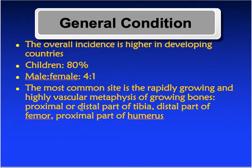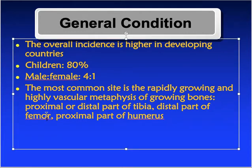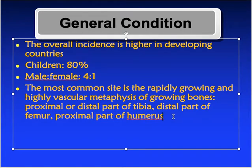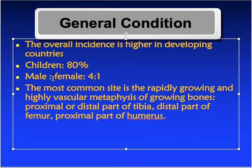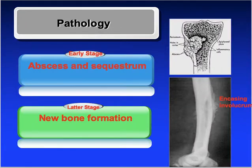The overall incidence is higher in developing countries. In children it is 80% with a male-to-female ratio of 4:1. The most common site is the rapidly growing and highly vascular metaphysis of growing bones — the proximal and distal tibia, distal femur, and proximal humerus. These are all long bones in growing-age patients.